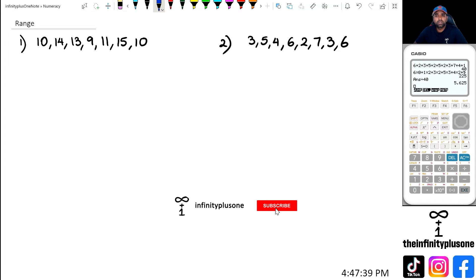All right folks, so to calculate the range for a particular set of values, all you have to do is take the highest value and subtract it with the lowest value, and that is what your range is.